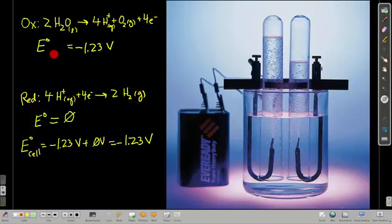The standard reduction potential for this cell is negative 1.23 volts. In the other half cell, it's just hydrogen being reduced. That's the standard cell, that's our reference, and that's zero. So the overall cell potential for this one would be negative 1.23 volts. You'd expect it to go in the opposite direction.